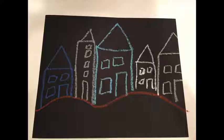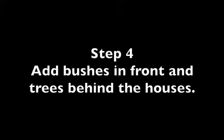Step three: draw multiple houses on your horizon of various shapes and sizes. Step four: add bushes in front and trees behind your houses.